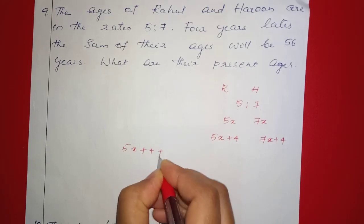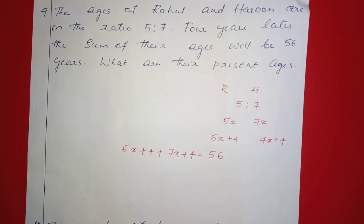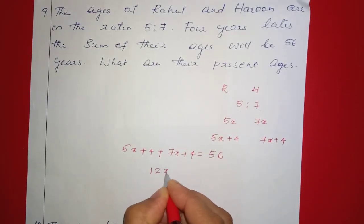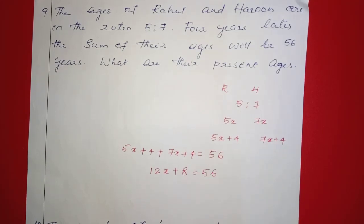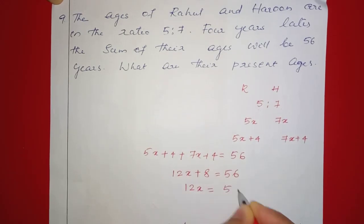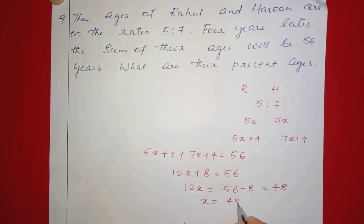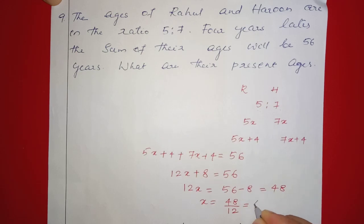So, 5x plus 4 plus 7x plus 4 is equal to 56. That gives 12x plus 8 is equal to 56. Therefore 12x is equal to 56 minus 8, which is 48. So x is equal to 48 divided by 12, which equals 4.